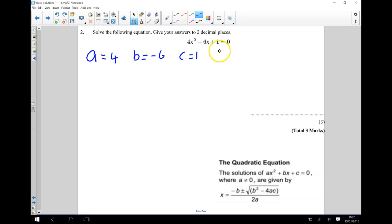So b squared take away 4ac is equal to, and I can use my calculator for this if I want to, so we'll do that.